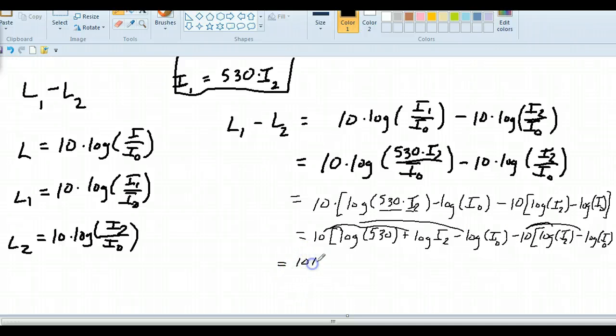And so I'm going to get 10 times the log of 530. All right. So what I've done here is I've distributed this 10 through here. And I've got 10 log 530 plus 10 log I2. All right. Minus 10 log I naught. And then distribute this minus 10 through. And I've got minus 10 log I2. And a minus times a minus is a plus 10 log I naught. What's going to happen here? This 10 log I2 and this minus 10 log I2 cancel. This minus 10 log I naught and this plus 10 log I naught cancel. So what are we left with? The only thing left is 10 times the log of 530.